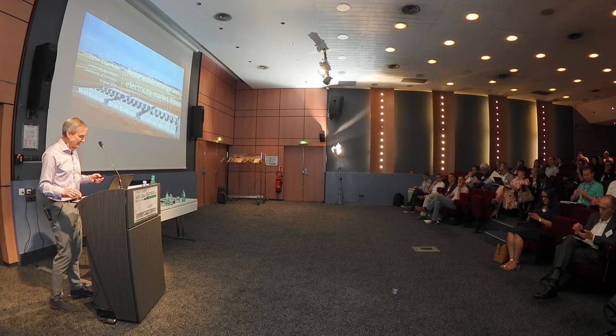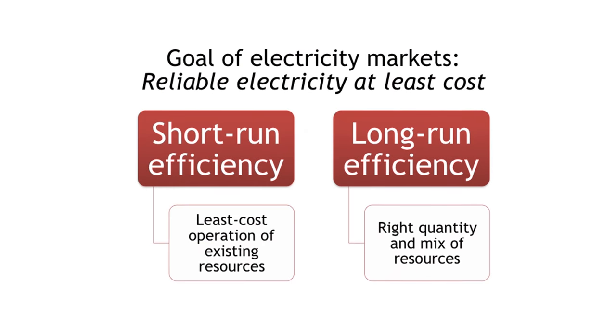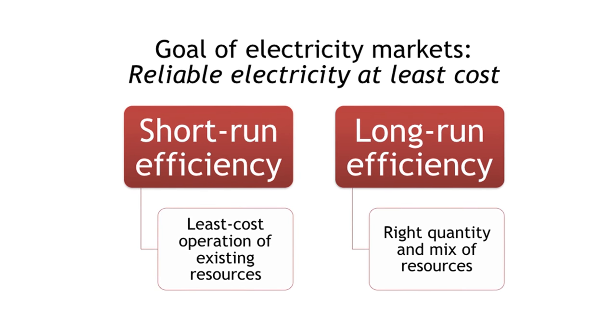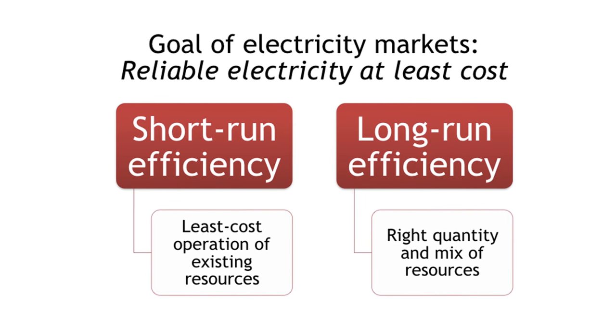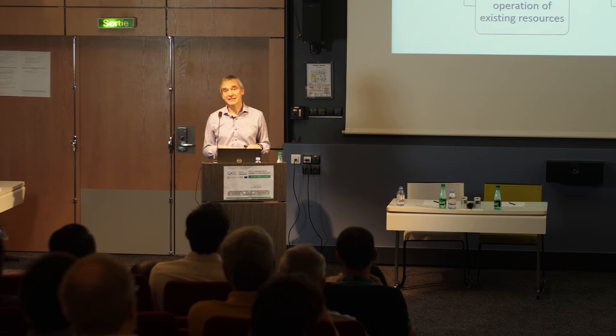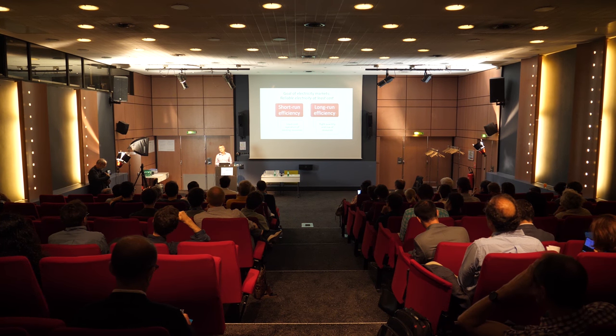When talking about market design, I always start with: what's the goal of the market? For electricity, the goal is straightforward — reliable electricity at least cost. I split this into two forms of efficiency: short-run efficiency, making the best use of existing resources, and long-run efficiency, getting the right mix and quantity of resources. Short-run efficiency is a necessary condition for long-run efficiency — that is the place to start.